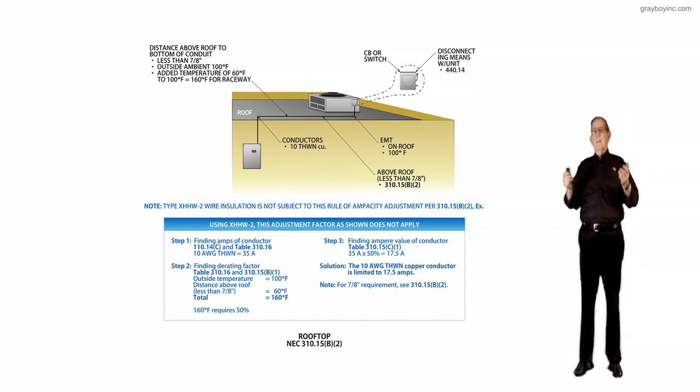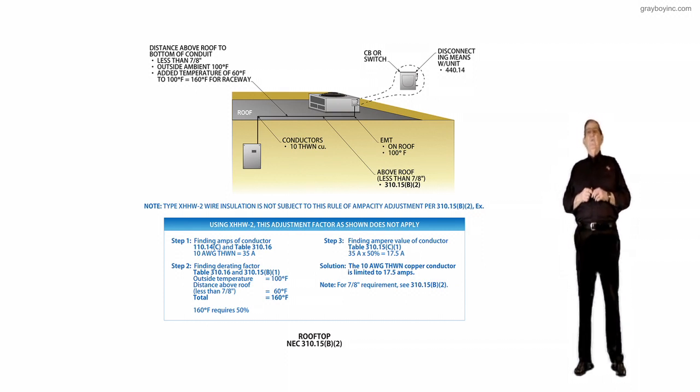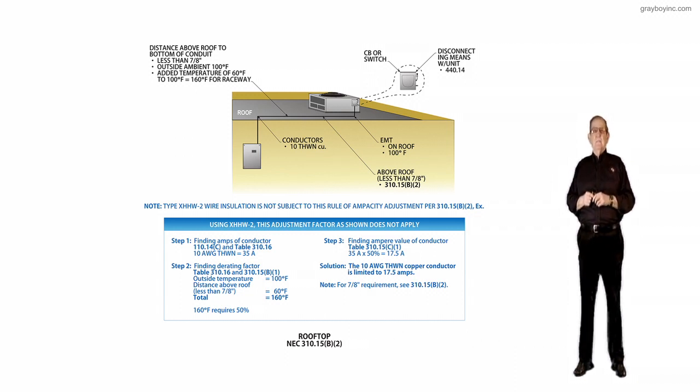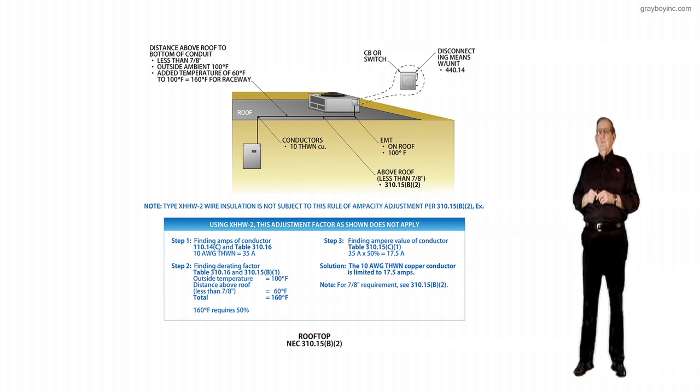You'd say, man, I can't afford that. I'm here in Arizona, the temperature is just very hot during the summer, so I'm just going to use XHHW slash 2. And if we see the 310.15B2 exception, it says if you use that, then it doesn't matter. A lot of your engineers will use XHHW slash 2 and they don't get into the derating factors, and most authority having jurisdiction recognizes that. So you see in the note, type XHHW slash 2 wire insulation is not subject to this rule of ampacity adjustment for 310.15B2 exception.